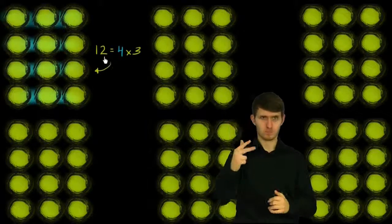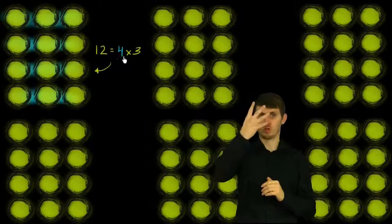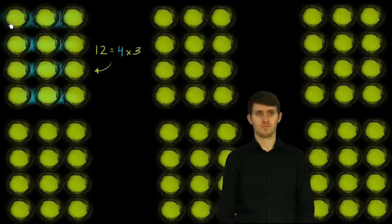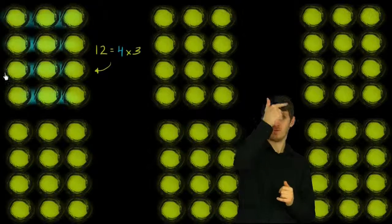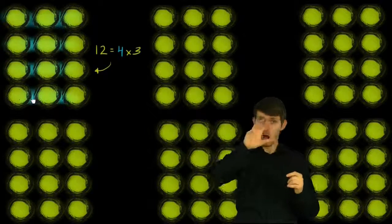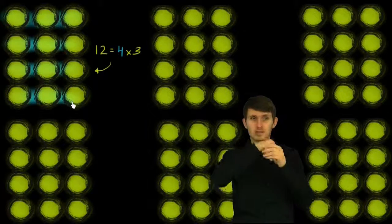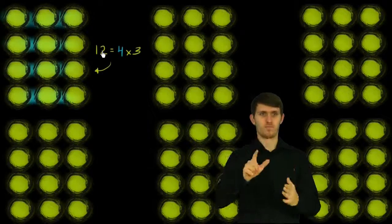Another way of reading this is that 12 is equal to 4 times 3. If I have 1, 2, 3, 4 groups, and in each of those groups I have 1, 2, 3 objects, I'm going to have a total of 12 objects.